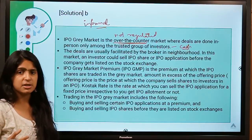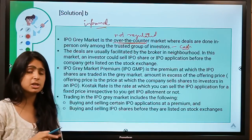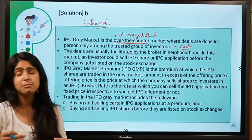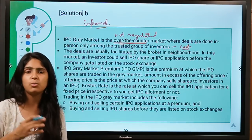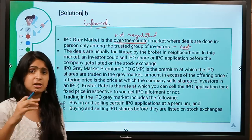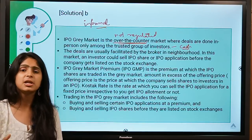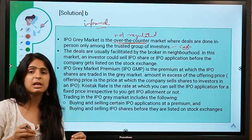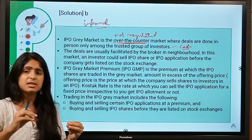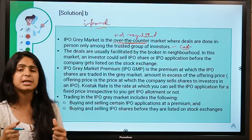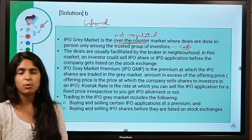The gray market is simply the dealing of shares before a company's listing on a stock exchange. To avail the benefit of a listing pop, many investors want to own shares even if they weren't allotted during the IPO. People who were allotted shares during the IPO sell them at a premium in the gray market to those who want to own shares before listing.